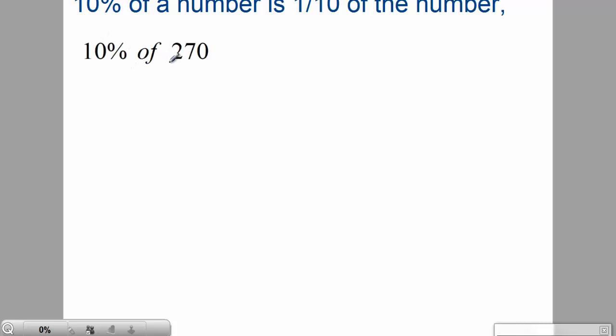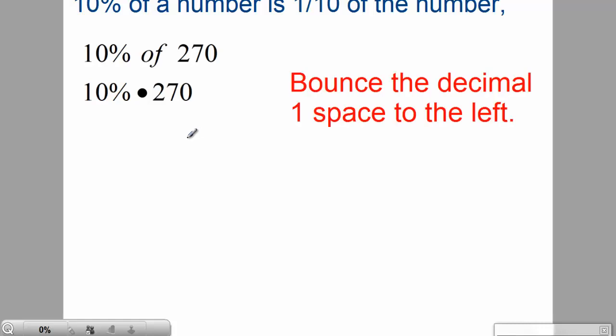For example, 10% of 270. 'Of' means times, so I'm going to change that to times. Then the 10% rule says all you have to do is balance the decimal one place to the left. So 10% of 270 is 27. Circle your answer. Wow, that was hard.